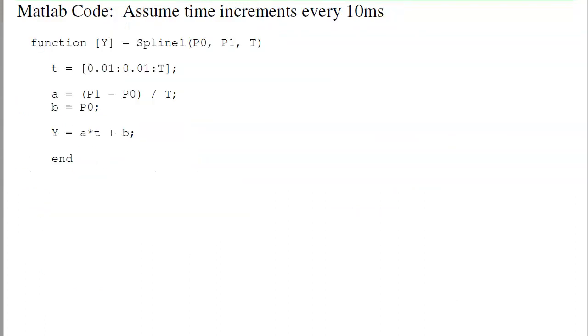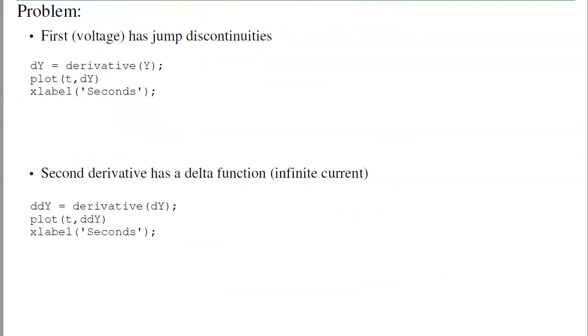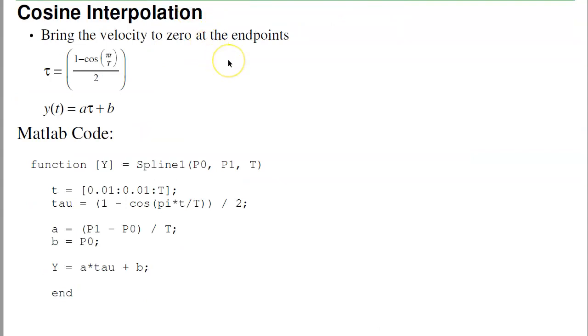Second option, let's do cosine interpolation. Instead of having a straight line going from point A to point B, I'm going to do a cosine. The cosine starts flat and goes up and becomes flat. This is a cosine function that's going to have finite or zero velocity at the two endpoints.